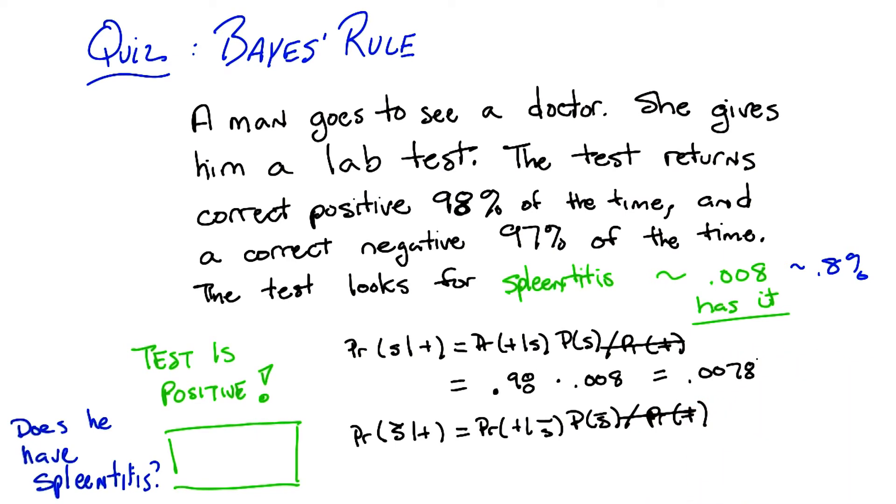Okay, fine. We can do the same thing over here. So what's the probability of getting a positive if you don't have splenitis? So, the probability of a correct negative is 97%. That means if you really don't have it, it's going to say you don't have it. So probability of positive result given that you don't have it, that should be the 3%. That's exactly right. Times the prior probability of not having splenitis, which is? 0.992. 1 minus 0.008. That's right. And that is equal to? 0.02976.